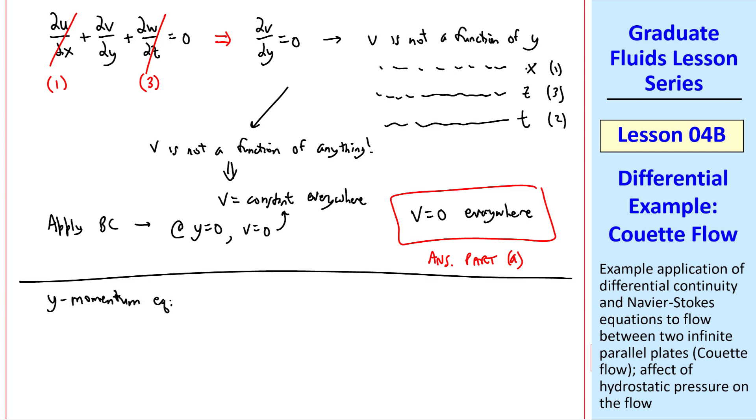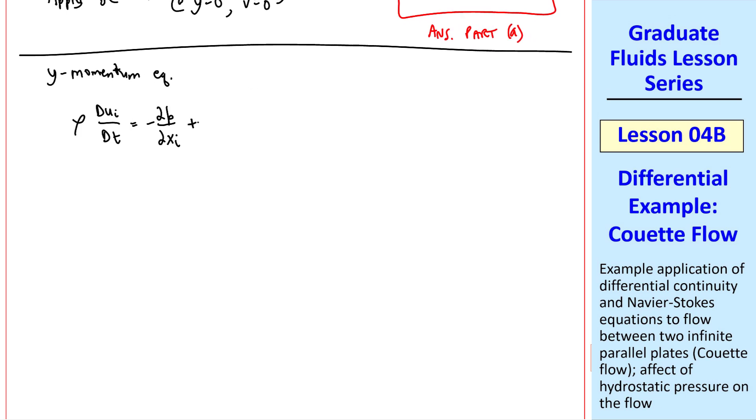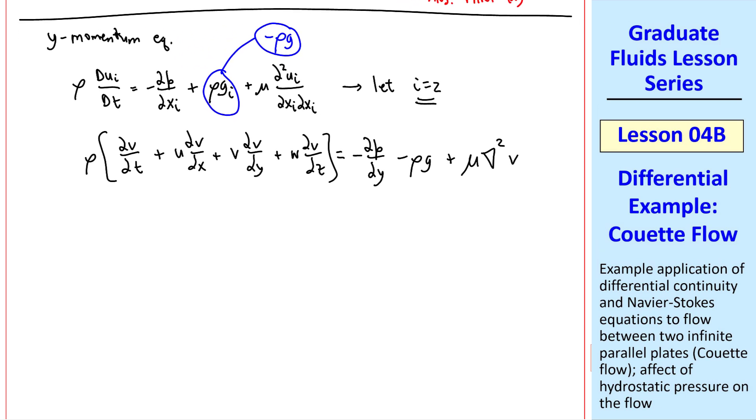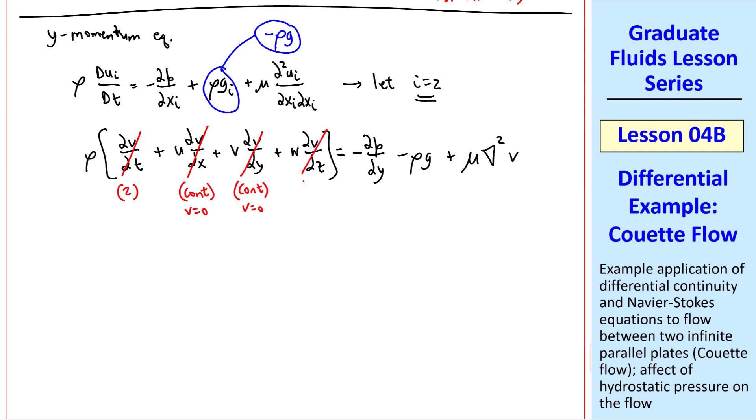Now let's examine the y momentum equation. In tensor notation, we write it this way, and we let i equal two for the y coordinate. Expanding this out in Cartesian coordinates, we have these four terms on the left, the negative del p del y on the right. And for i equal two, this term is just negative rho g, and the last term is the Laplacian of v. As I did above, I like to put the reason for crossing terms out under each term.